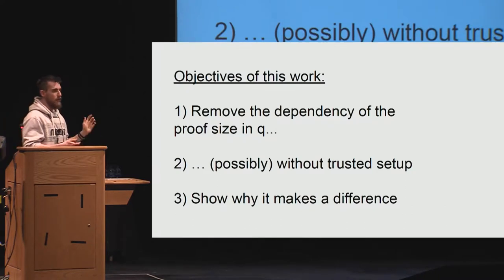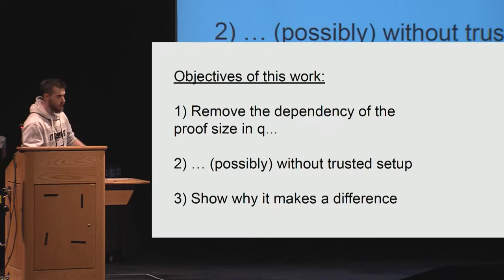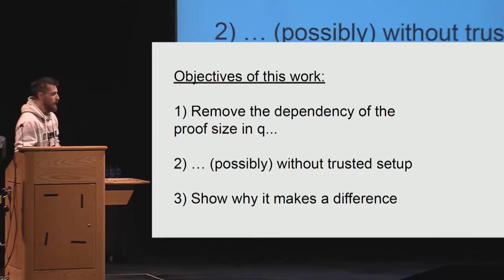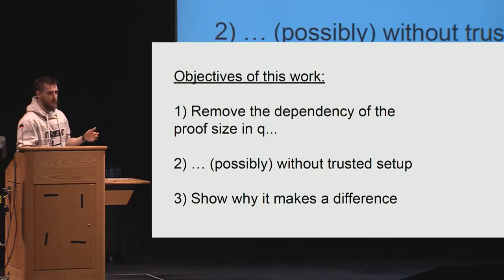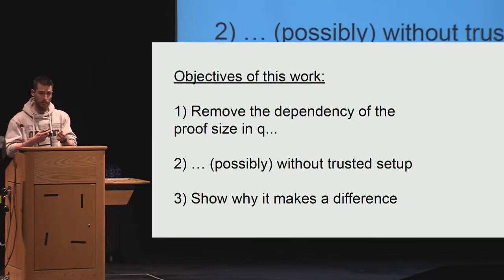So the question is, can we do better? The objective of my work with Russell was to remove the dependency on the size of Q, and do that potentially without relying on trusted setup. We were not always successful, so we give some constructions and then show where it makes a difference, giving applications where this is particularly important.